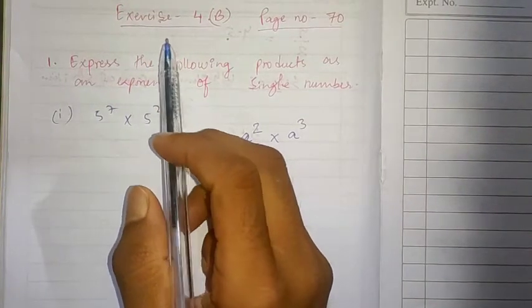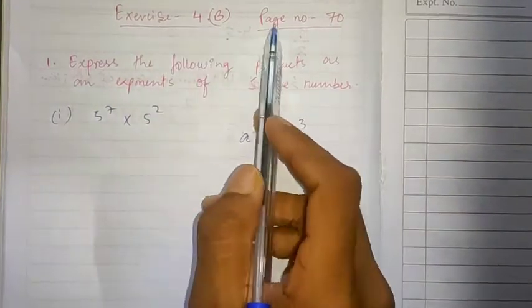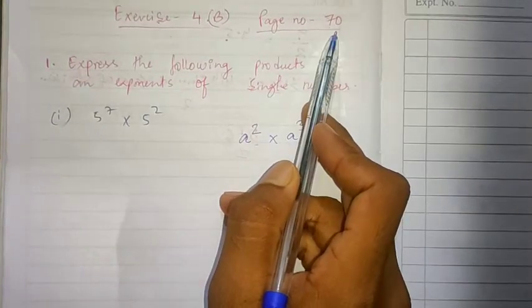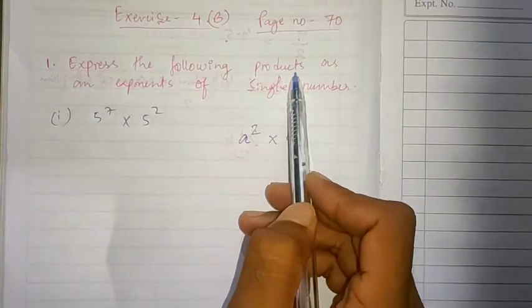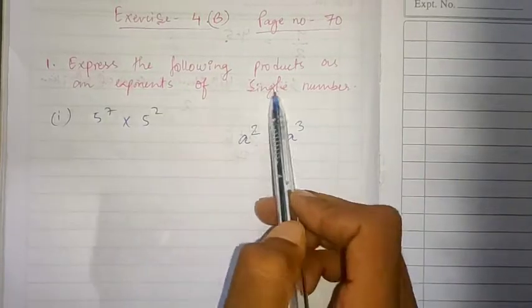Hello students, today we will be starting exercise 4B given in page number 70. We will start the first question: express the following products as an exponent of single number.